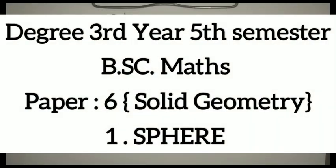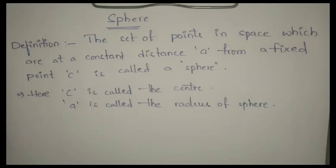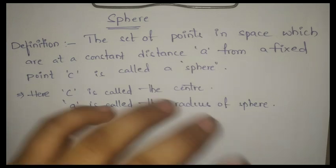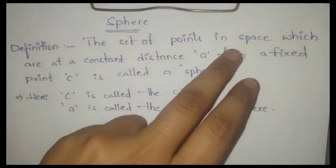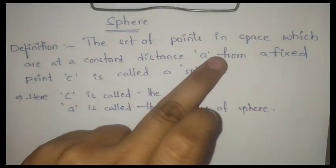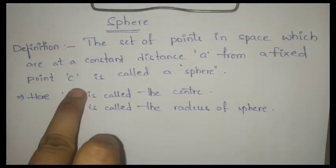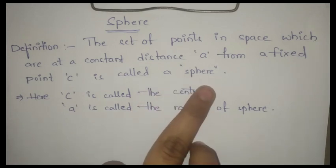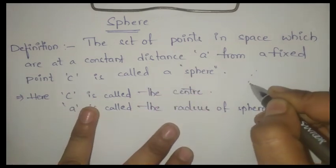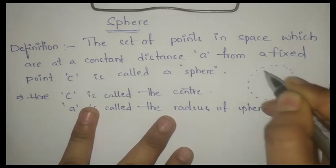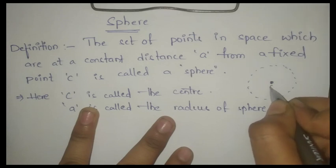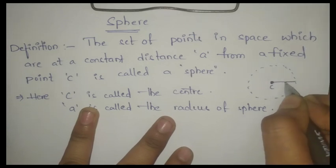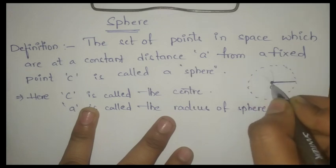Hi friends, in this video I am going to explain degree third year fifth semester paper 6, solid geometry, first unit: sphere. Definition of the sphere — the set of points in space which are at a constant distance from a fixed point. For example, some points in space are at a constant distance from a fixed point C — the same distance on all sides.